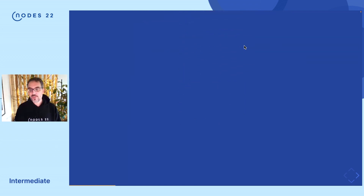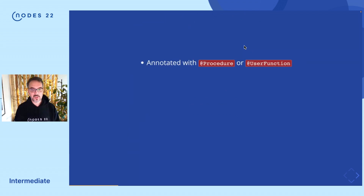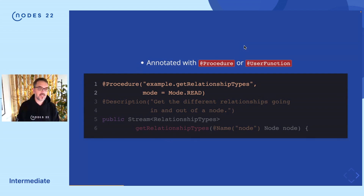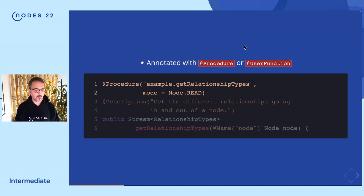So how does Neo4j find your code — basically find the code you want to make available to the end user? You annotate them with either procedure or user function. You annotate a function with a procedure annotation, providing a name. In this example, 'get relationship types' is the final name of your procedure, and you use it with the CALL function of Neo4j from Cypher. You can also provide the mode — meaning read or write — specifying if your procedure will change the state of the database.